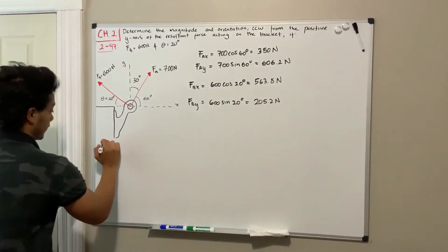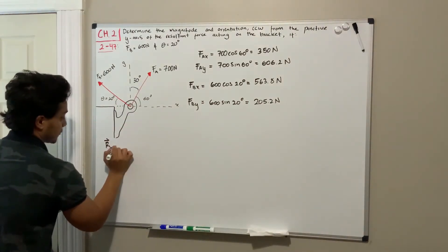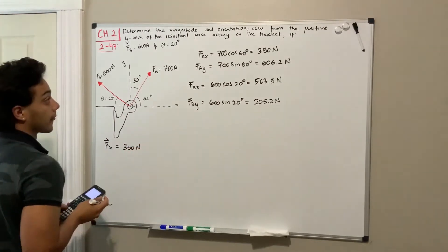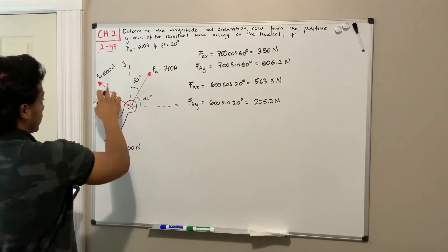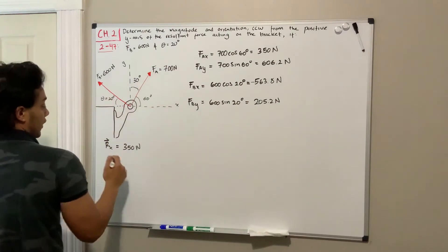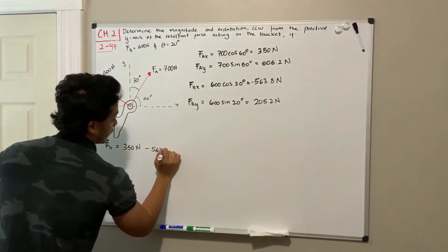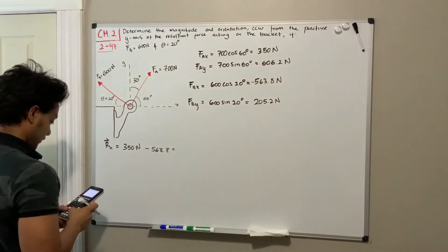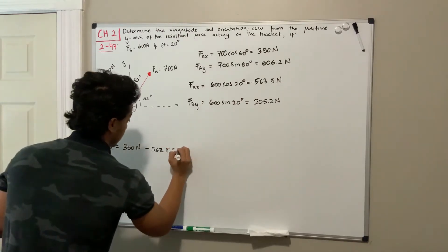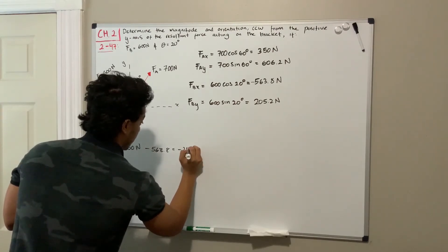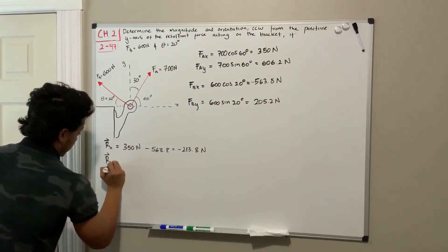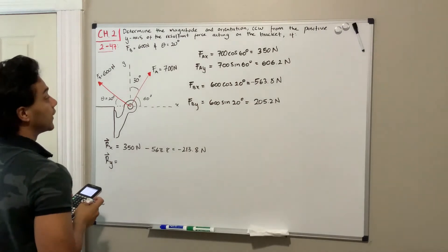In order to find the resultant, we're going to add the components. The resultant in the x-direction is going to be equal to 350 newtons for F_a_x. Actually, F_b in the x-direction has to be negative since it's going to the left, minus 563.8. If we do this, we get 350 minus 563.8, we get negative 213.8 newtons.